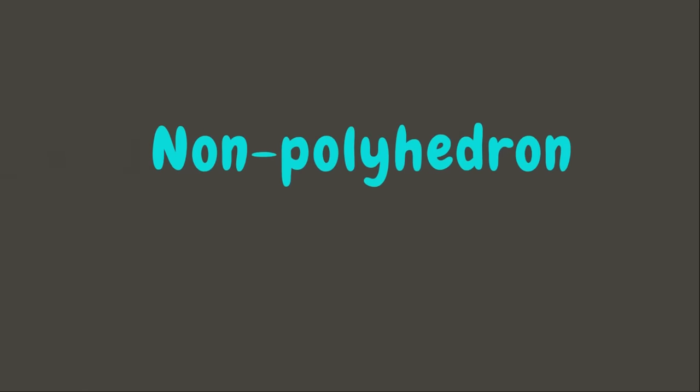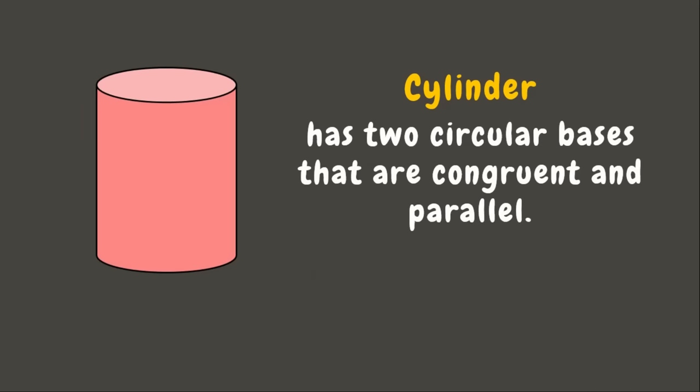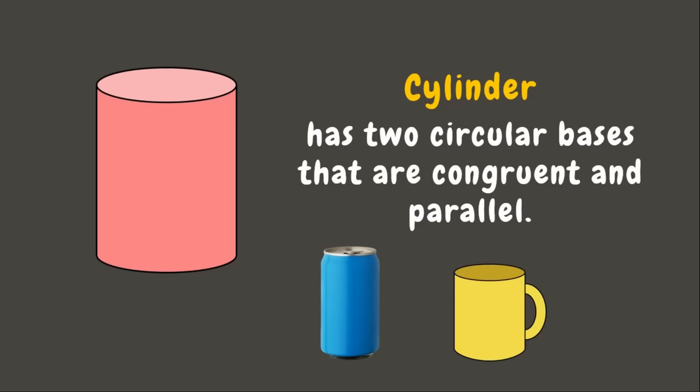Now let's move on to non-polyhedron solid figures. Non-polyhedron solid figures have curved surfaces. Our first example is a cylinder. A cylinder has two circular bases that are congruent and parallel. Examples are a can of soda and a mug.